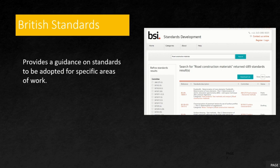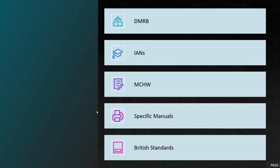To summarize, the main references are DMRB and MCHW — these two are very important — along with the Traffic Signs Manual. I hope you understood the basics covered in this video. Thanks for watching. Please subscribe to my channel for more interesting updates.